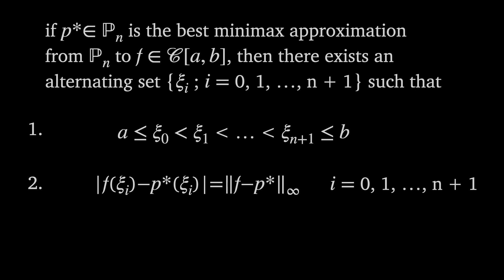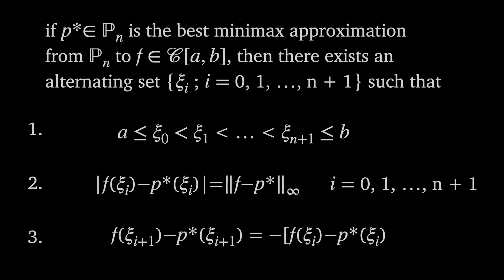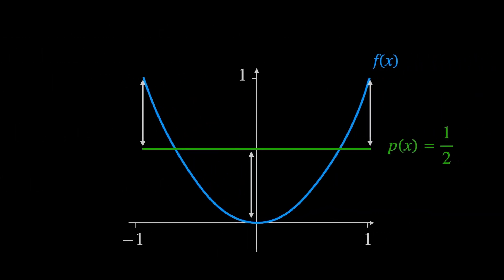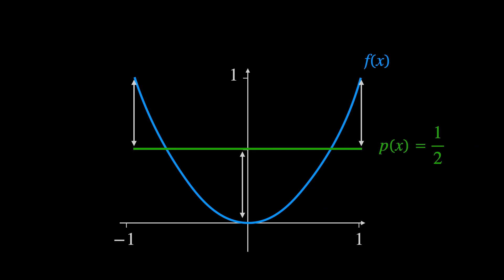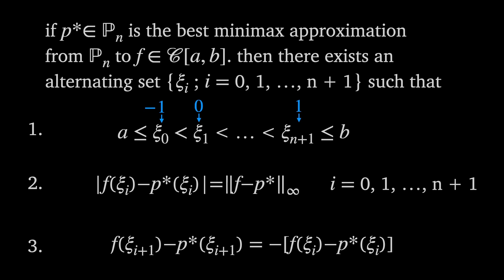This means there are no other points in the interval where the error exceeds those at the alternating set. Finally, the sign of the errors oscillates so that the error at ξᵢ₊₁ is the negative of the error at ξᵢ. In our previous example — the best minimax approximation p* in P₁ of f(x) = x² on [-1, 1] — the alternating set was {-1, 0, 1} with maximum error 1/2, and the sign of f - p oscillated: +1/2 at x = -1, -1/2 at x = 0, and +1/2 at x = 1.